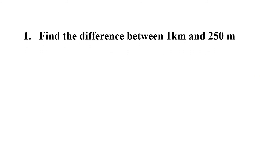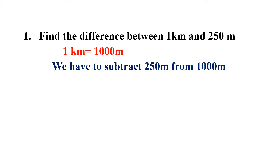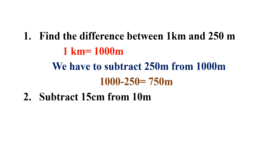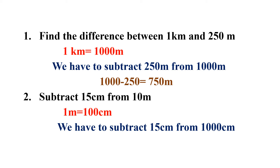Let us see these questions. Question 1: Find the difference between 1 kilometer and 250 meters. Before subtraction, we convert kilometers into meters. 1 kilometer equals 1000 meters. So we subtract 250 meters from 1000 meters: 1000 minus 250 is equal to 750 meters. Question 2: Subtract 15 centimeters from 10 meters. Convert meters into centimeters — 1 meter equals 100 centimeters, so 10 meters equals 1000 centimeters. 1000 centimeters minus 15 centimeters is equal to 985 centimeters.